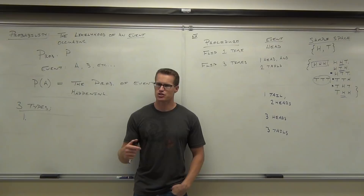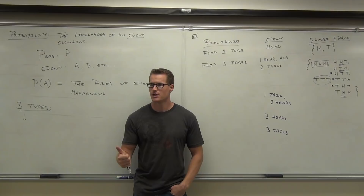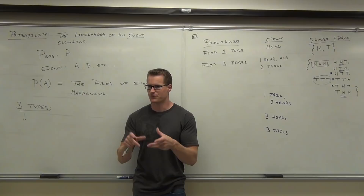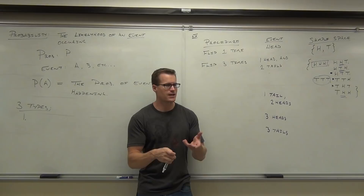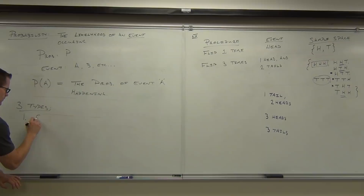The first type is what you get when you actually perform an experiment — it's called observed probability. Observed probability happens when you take your coin, flip it a hundred times, calculate how many heads you got and how many tails you got, and from there mathematically figure out the probability of getting a head. That's observed probability: when you actually do something and get a probability from that observation.